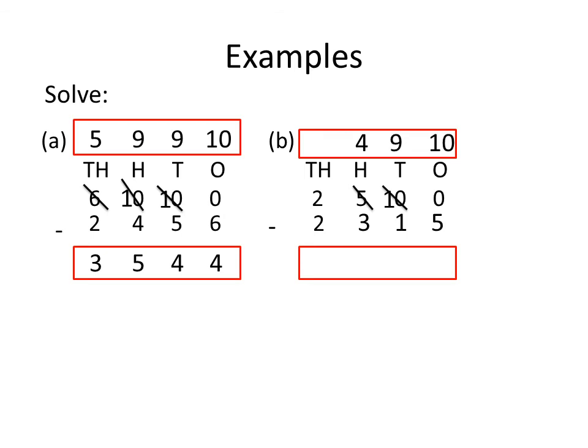Now, subtract it. First, subtract the 1's place digit. So, 10 minus 5 is 5. Now, subtract the 10's place. So, 9 minus 1 is 8. Now, subtract the 100's place digit. So, 4 minus 3 is 1. Now, subtract the 1000's place. So, 2 minus 2 is 0. The answer is 0185.